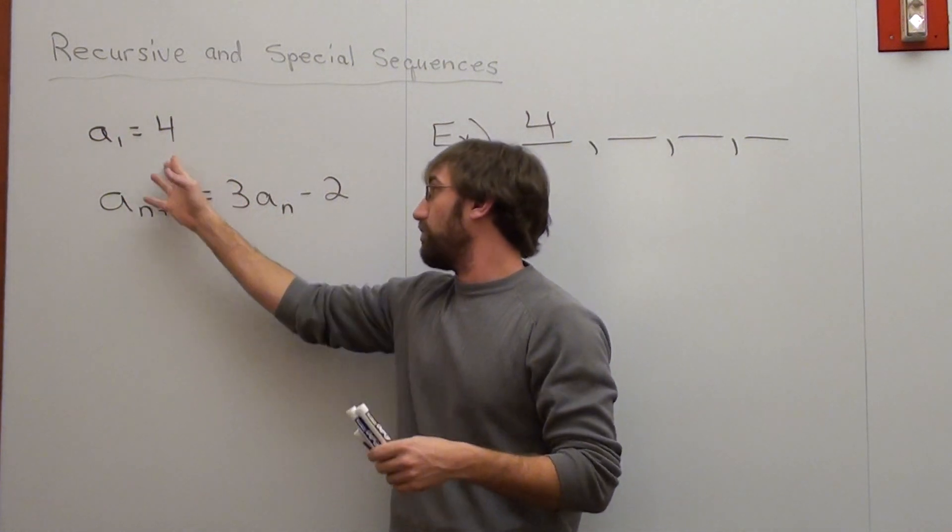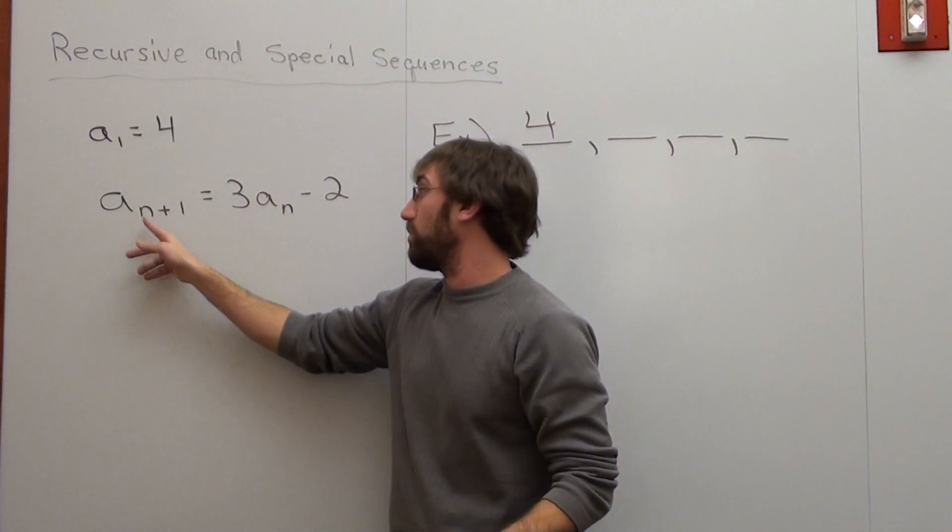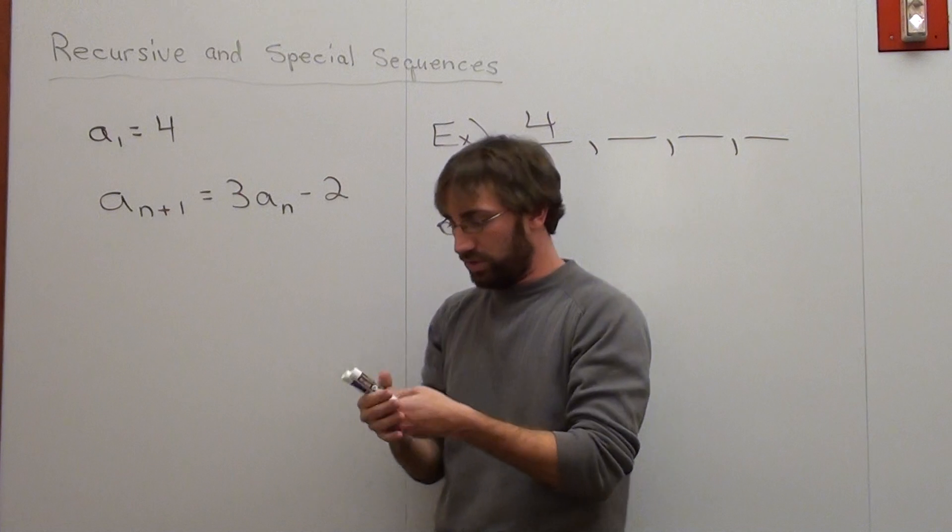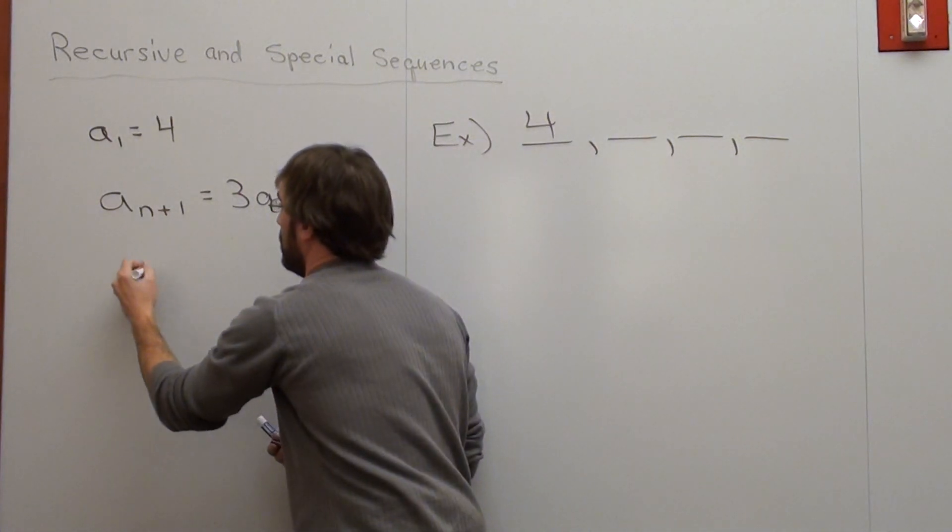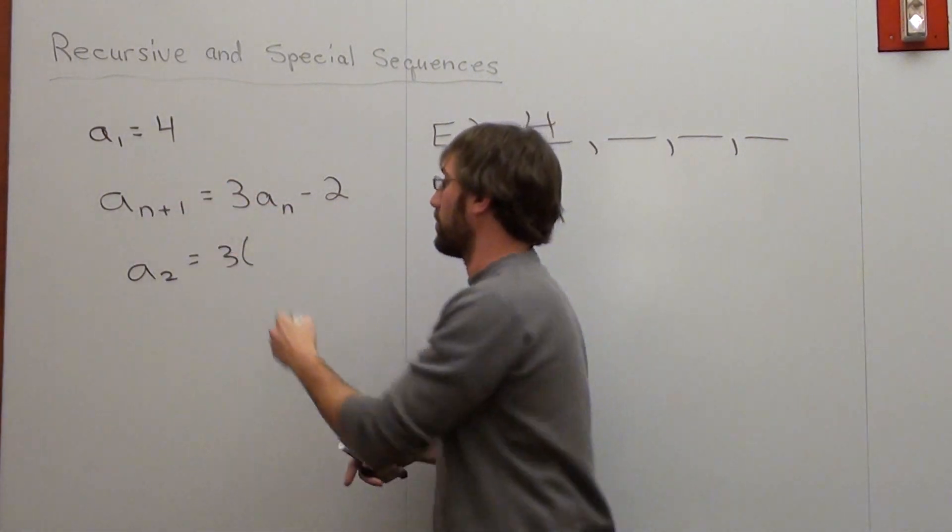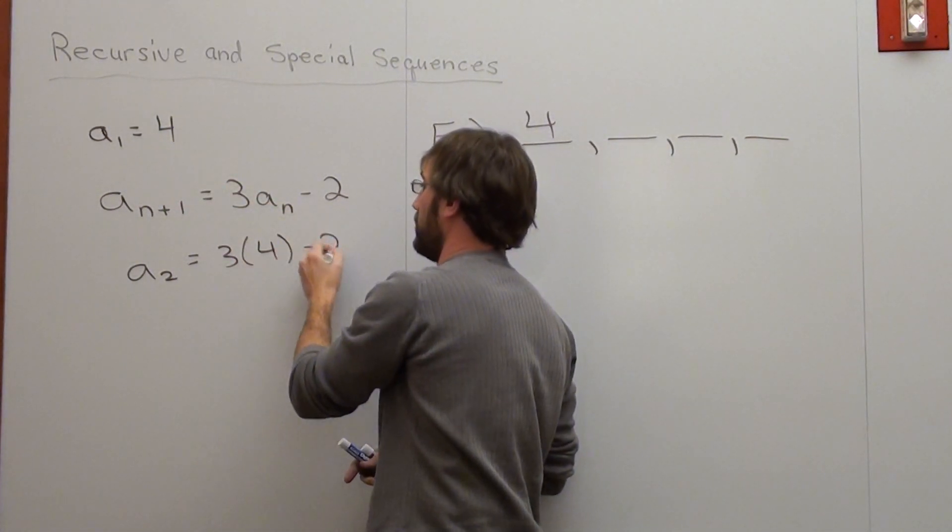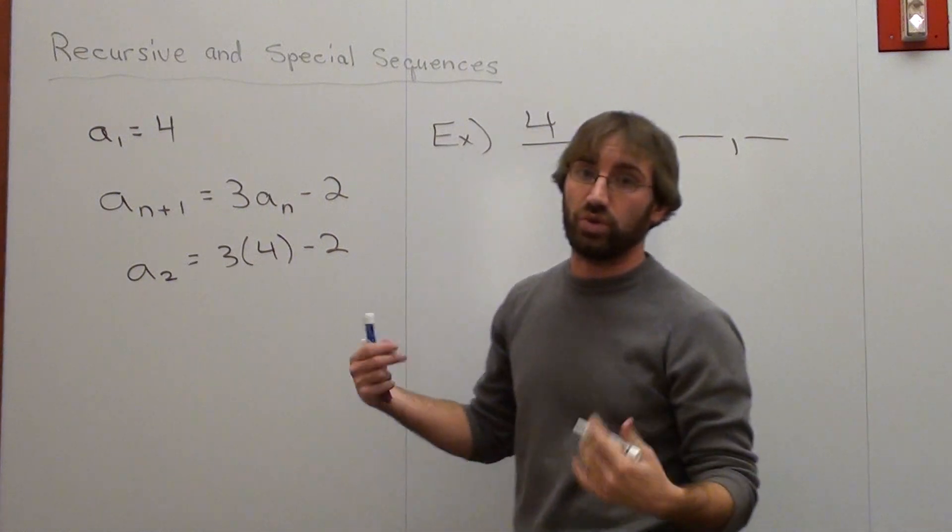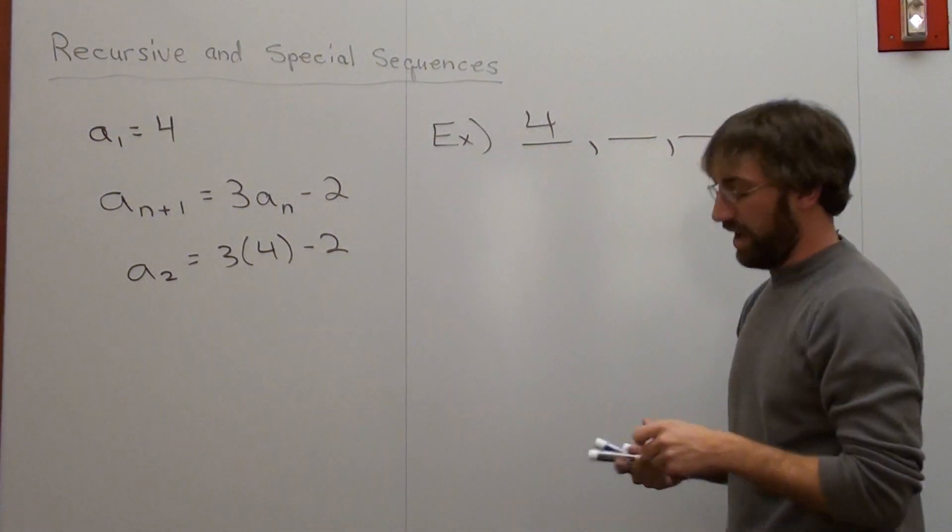So A sub 1 is 4. If I want to figure out A sub 1 plus 1, which would be A of 2, basically all I do is plug in the first one, or substitute in the first one: 3 times 4, subtract 2. 3 times 4 is 12, 12 minus 2 is 10.